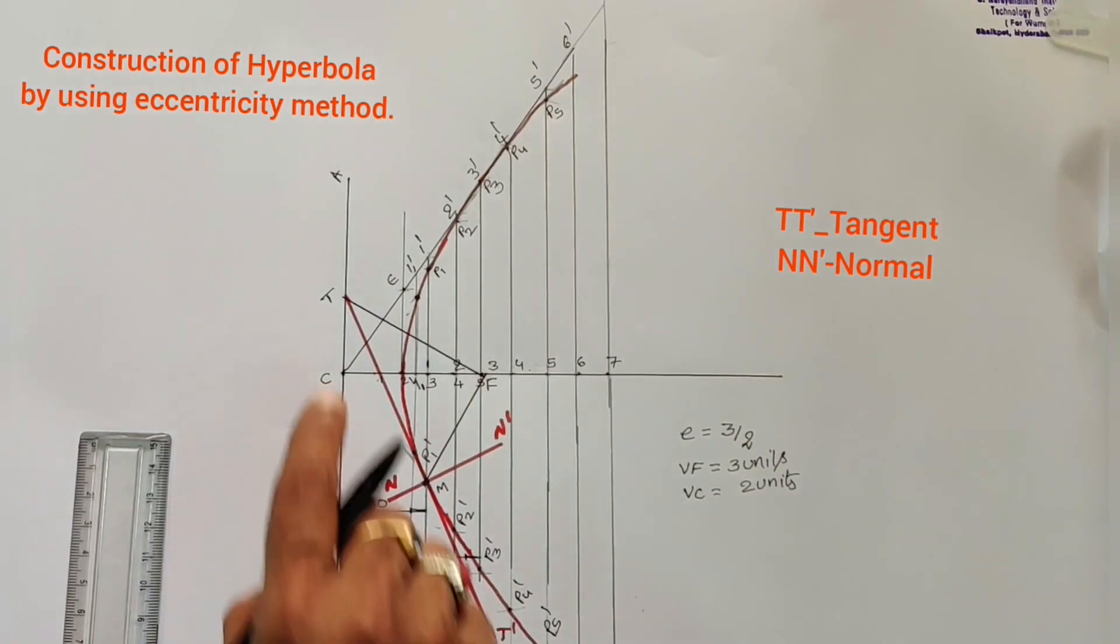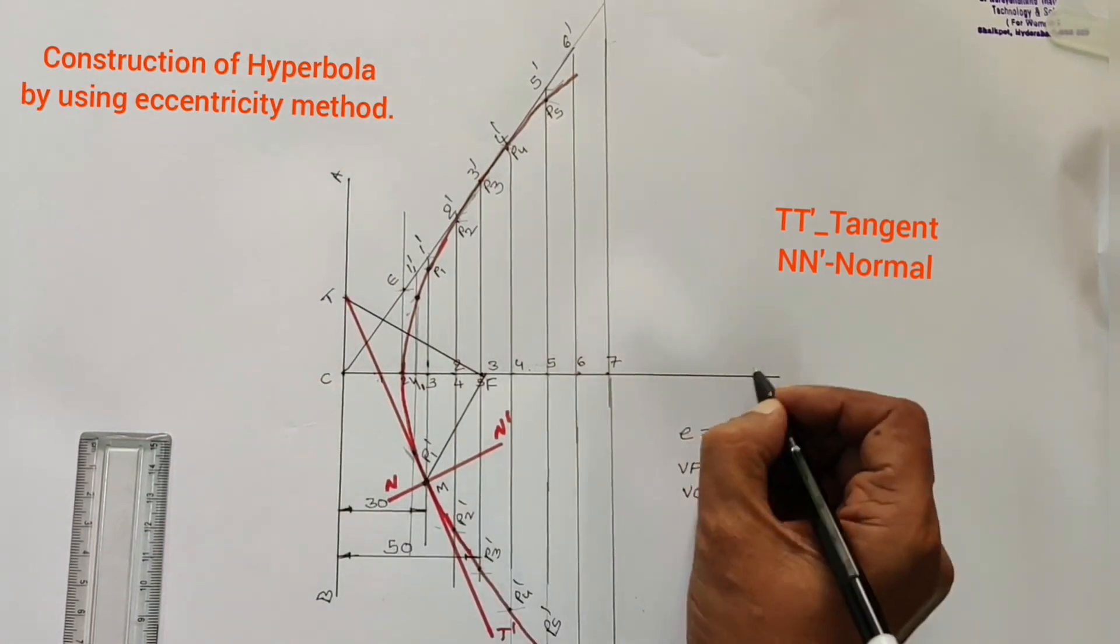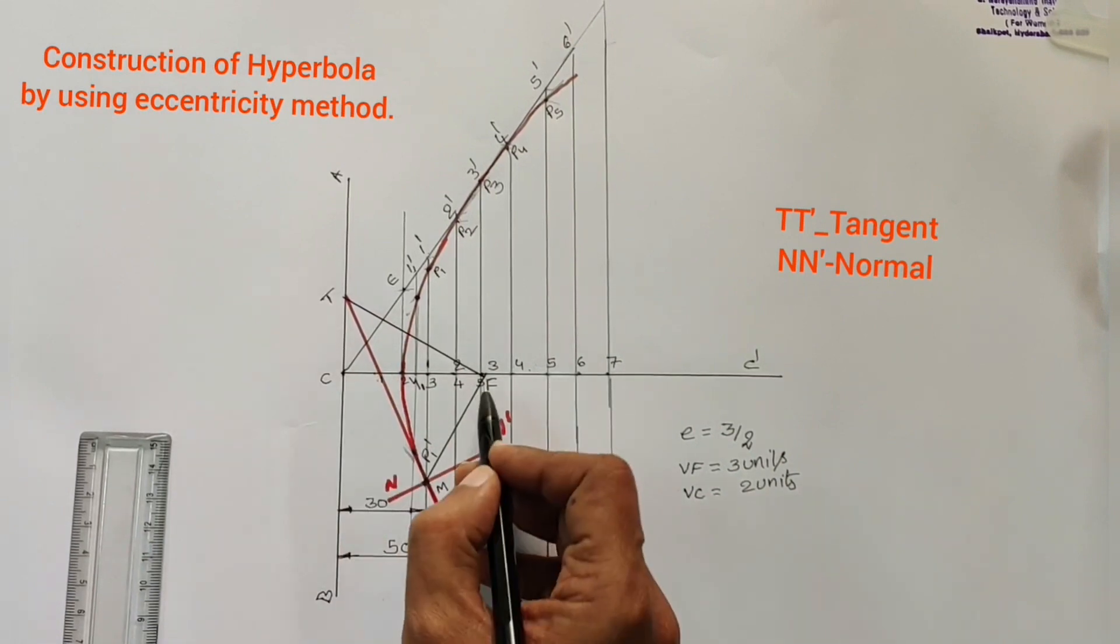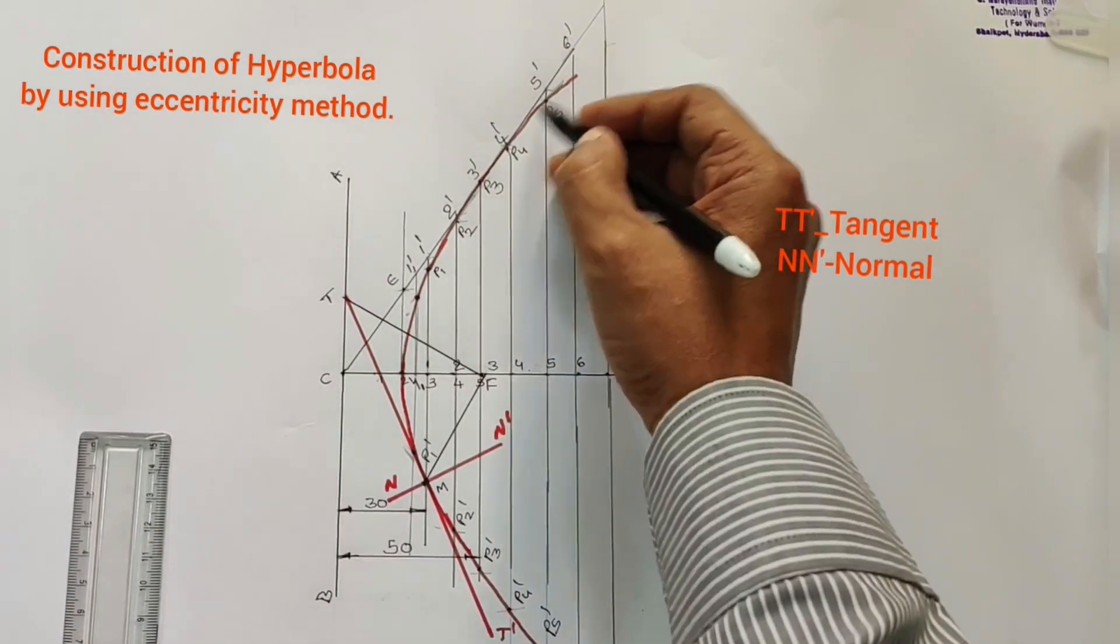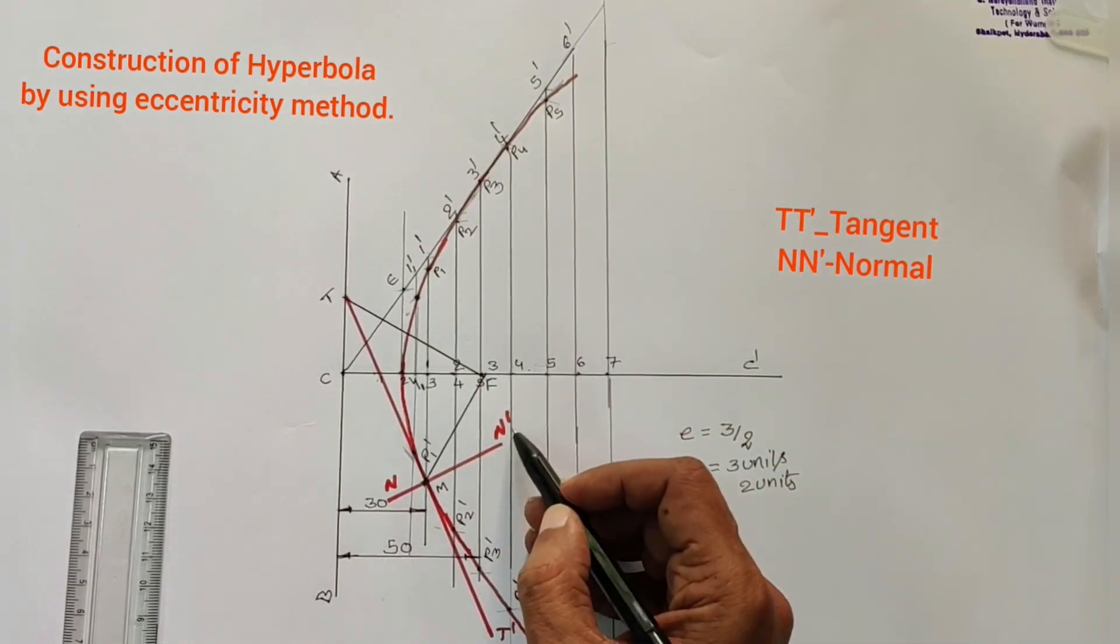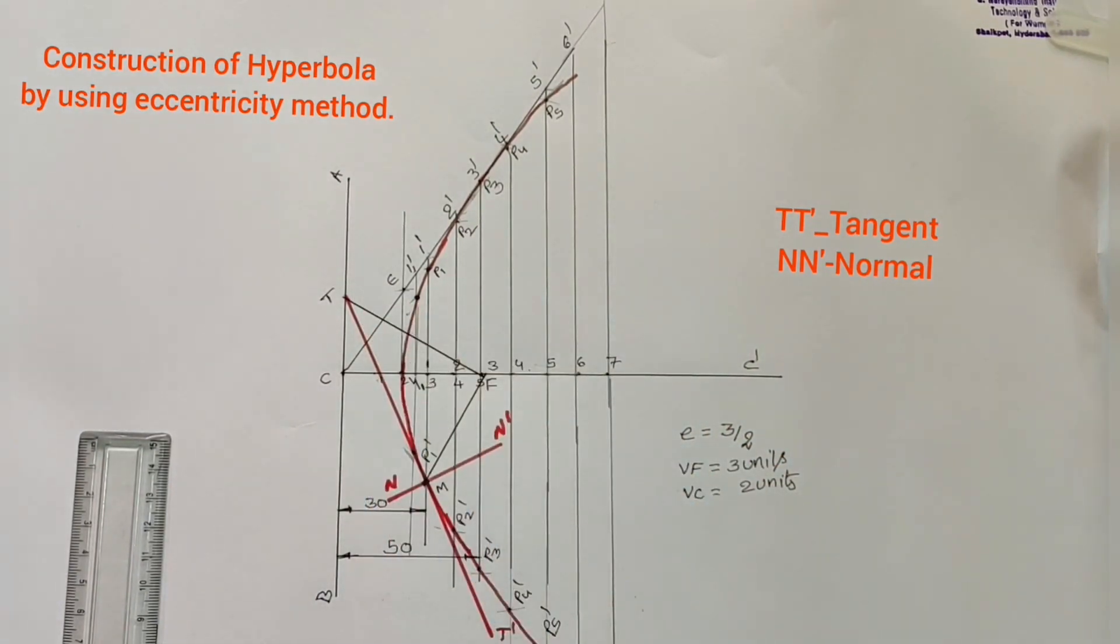Here, AB is the directrix. And, C, C dash is the axis. V is the vertex. F is the focus point. This curve is called the hyperbolic curve. N, N dash is the normal. T, T dash is the tangent.